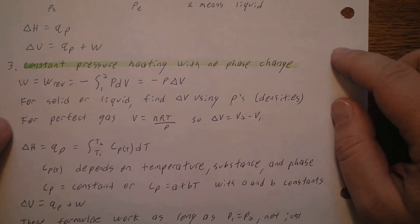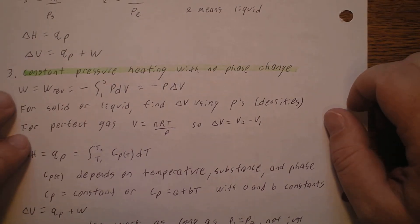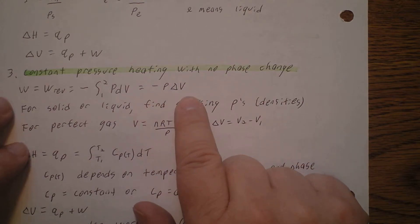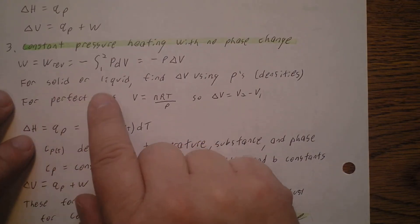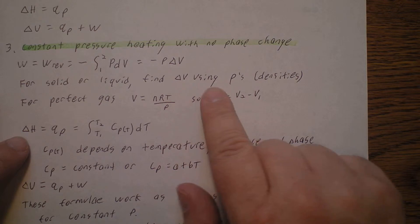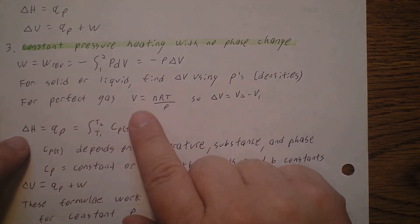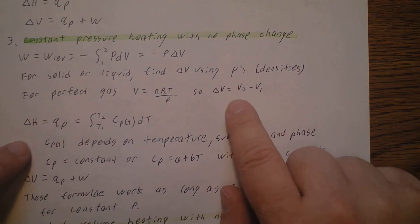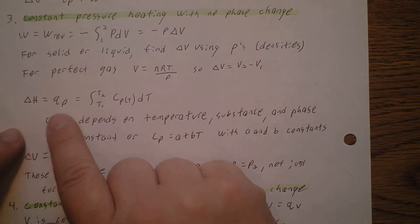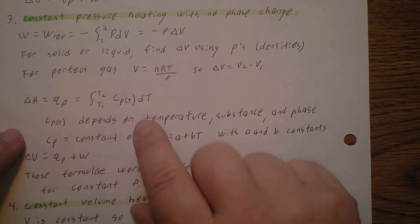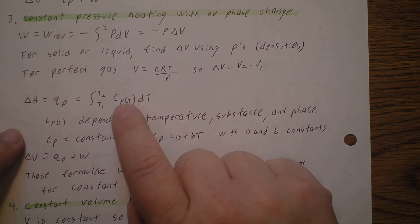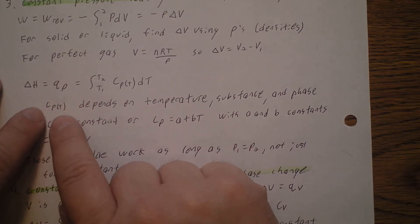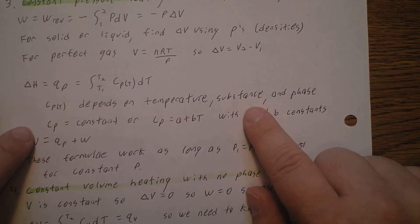Now let's talk about constant pressure heating with no phase change — the temperature can change. Work, considering only reversible work, is minus the integral from state one to state two of P dV, which gives us minus P delta V since pressure is constant and comes out of the integral. For a solid or liquid we use the change in volume via the densities. For a perfect gas, volume equals nRT over P, so the change in volume is the final volume minus the initial volume. The change in enthalpy equals the integral from T1 to T2 of the heat capacity at constant pressure, Cp(T), with respect to temperature — written with parentheses to show it varies with temperature.